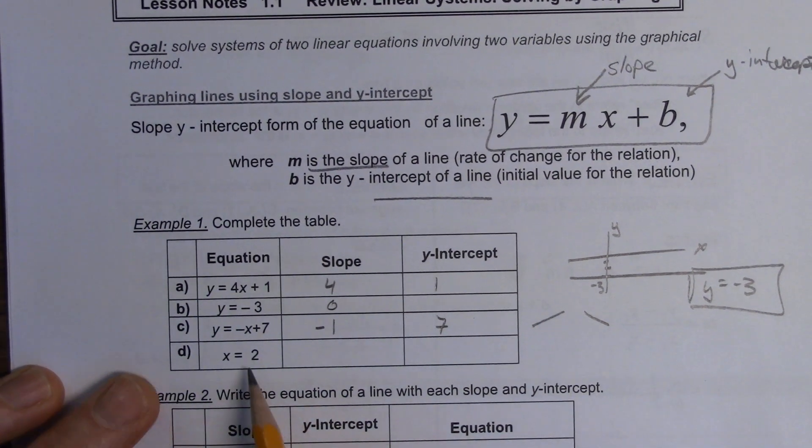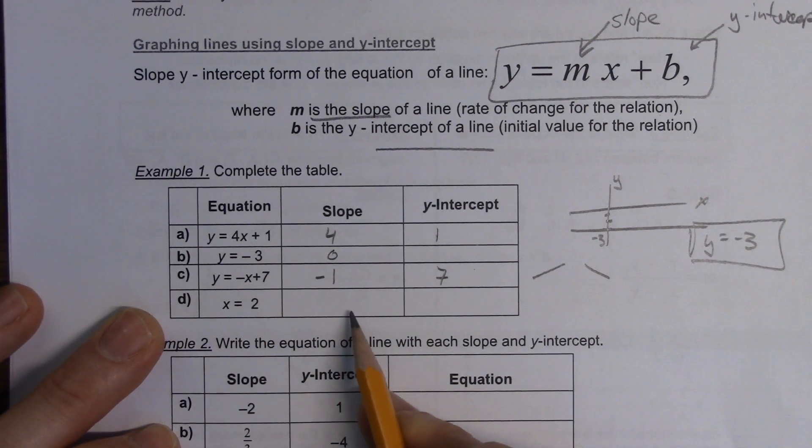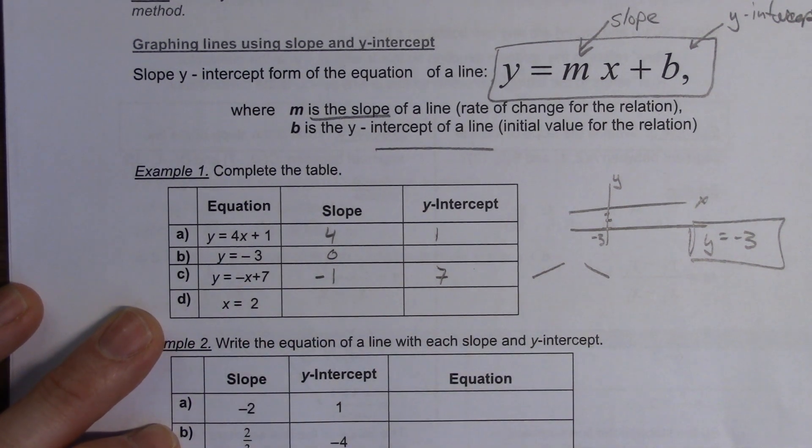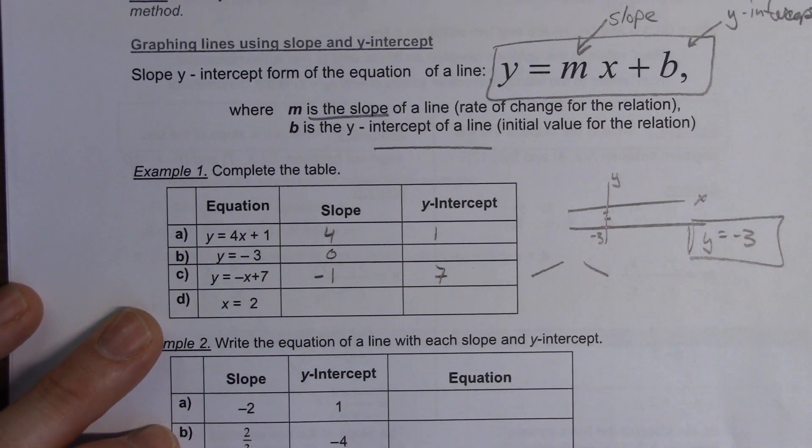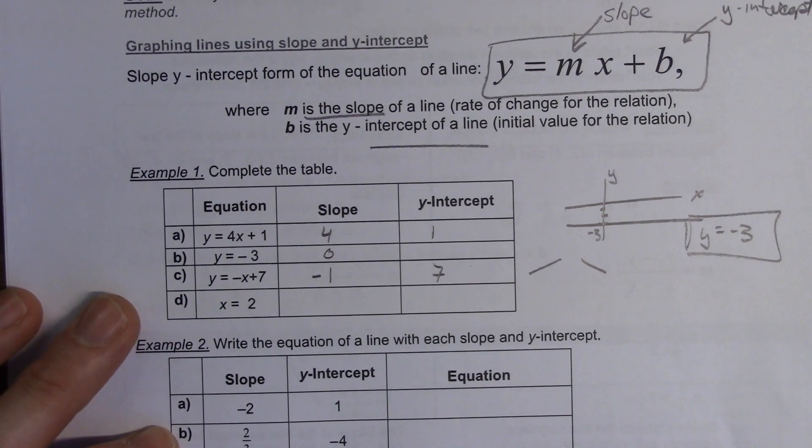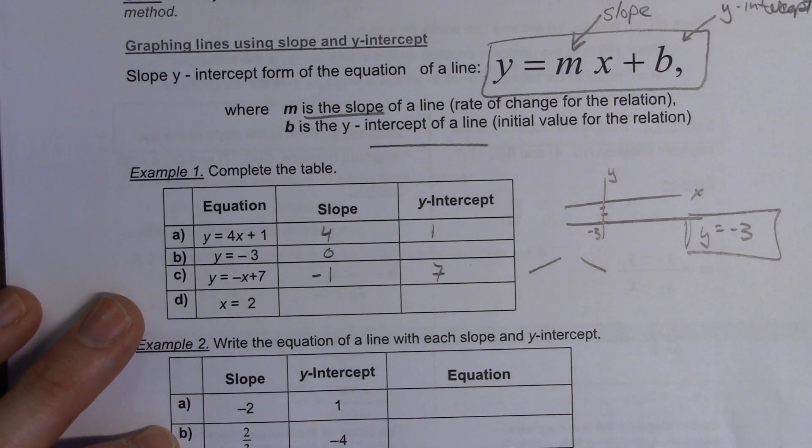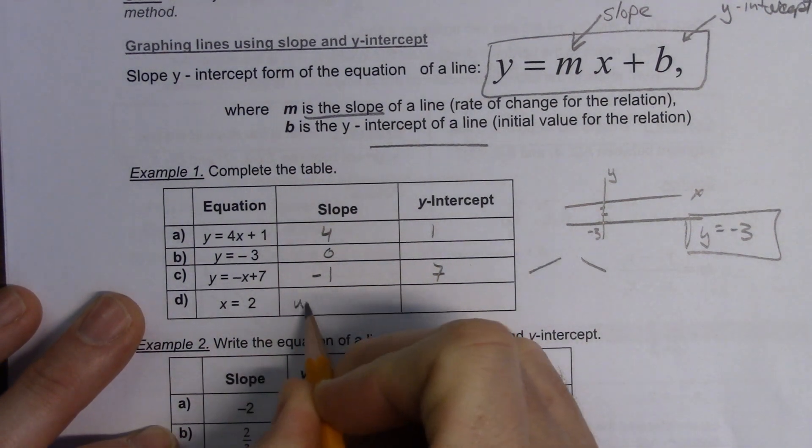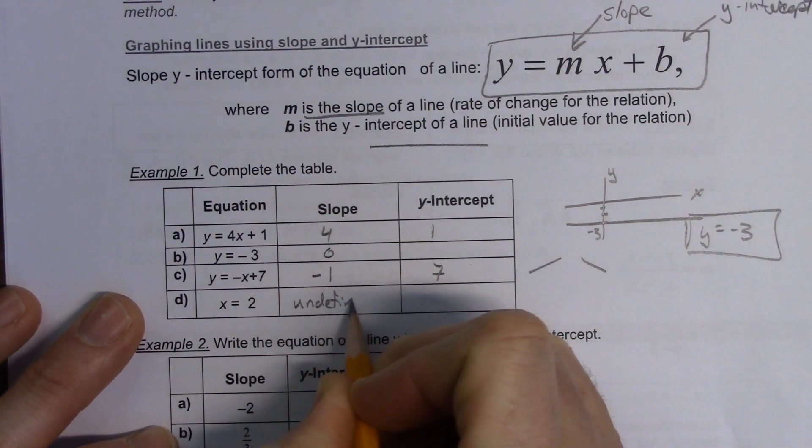Okay, next one. Matthias, x equals 2. Is the slope going to be... What's the slope going to be? 2. Not 0, no. Not 2, either. It's undefined. Yeah, Jezai said it. It's undefined.